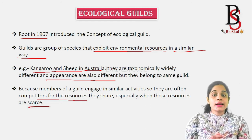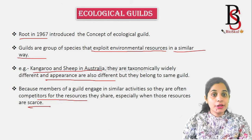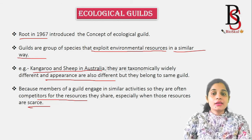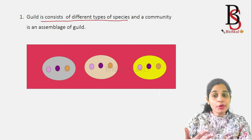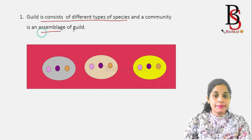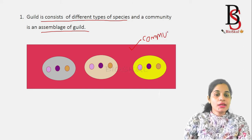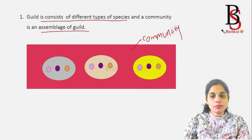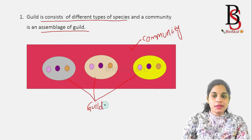Species within a guild are competitors, and that competition is inter-specific competition. A guild consists of different types of species, and a community is an assembly of guilds. Consider this community — it consists of three guilds, and each guild contains different species.